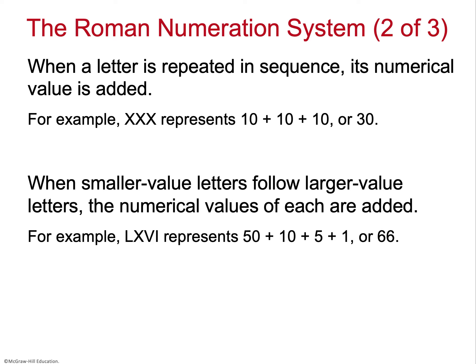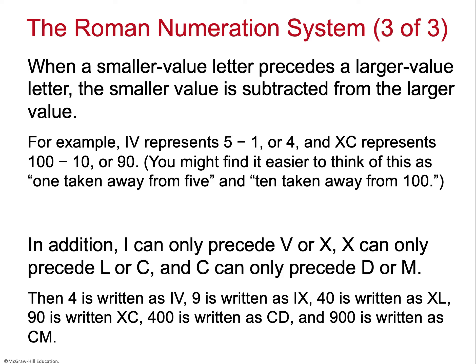When a Roman numeral letter is repeatedly written next to each other, you add them — so XXX is 10 + 10 + 10 = 30. When smaller-value letters are followed by a larger-value letter, as in LXVI, you add: 50 + 10 + 5 + 1 = 66. It's only when the smaller value comes in front that you subtract — for example, IV is 5 minus 1 because I is less than V.